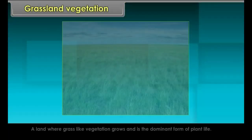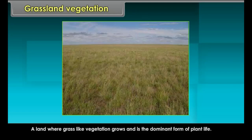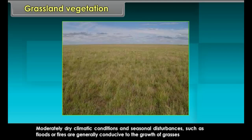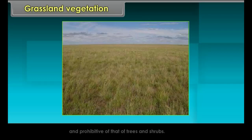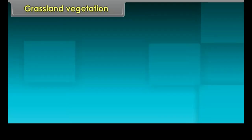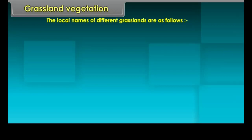Grassland Vegetation: A land where grass-like vegetation grows and is the dominant form of plant life. Moderately dry climatic conditions and seasonal disturbances such as floods or fires are generally conducive to the growth of grasses and prohibitive of trees and shrubs. The local names of different grasslands are as follows.